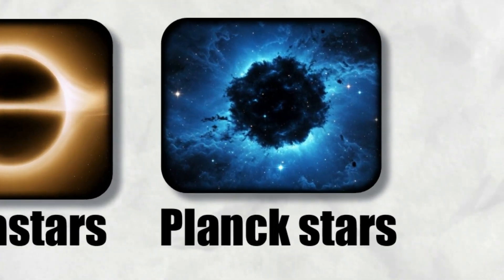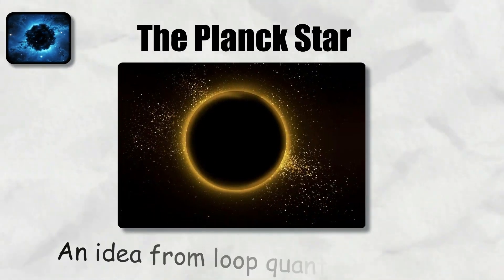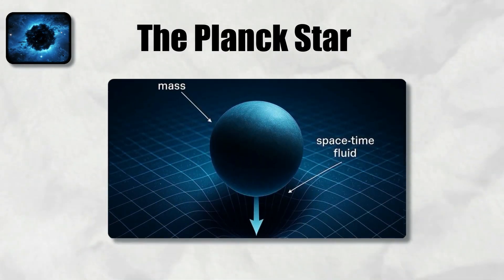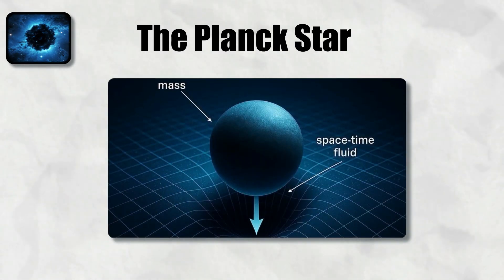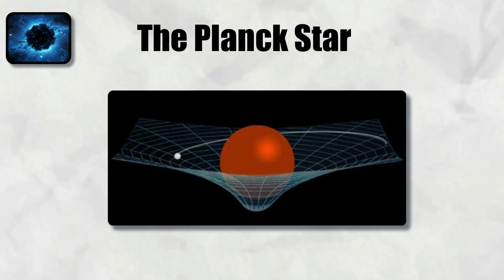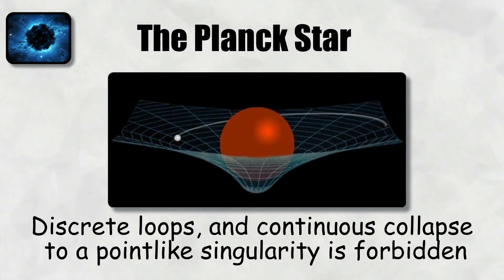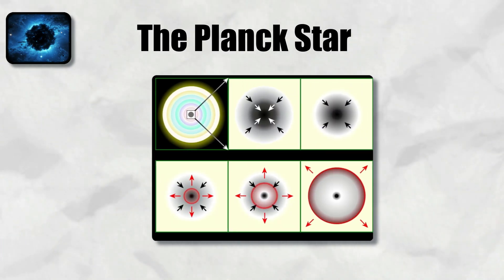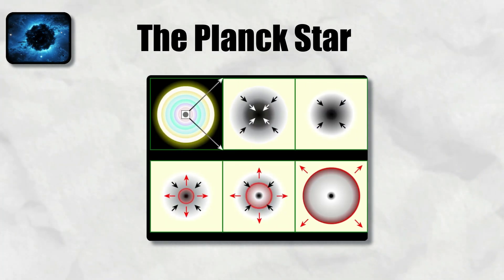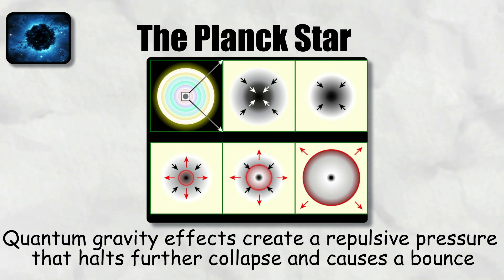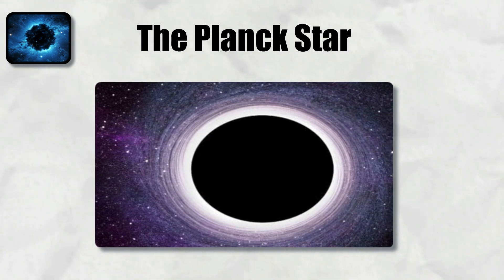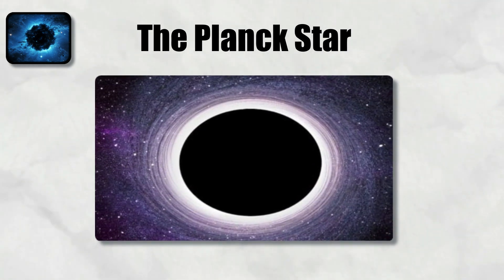Planck stars. The Planck star is an idea from loop quantum gravity, where spacetime itself is quantized at the smallest scales. In this theory, spacetime geometry is made up of discrete loops, and continuous collapse to a point-like singularity is forbidden. When a collapsing star reaches Planck scale density, quantum gravity effects create a repulsive pressure that halts further collapse and causes a bounce. The result is a Planck star, a dense core held up by quantum gravity.